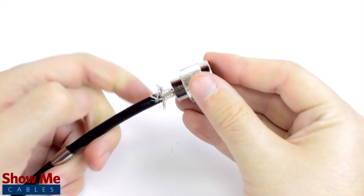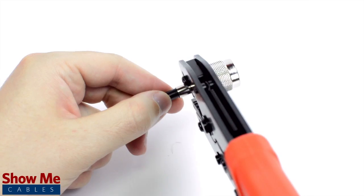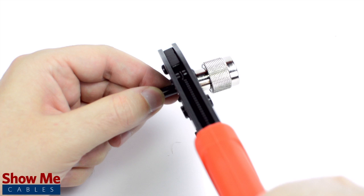Then slide the ferrule up to the base of the connector, folding the shield with it. Crimp the ferrule under the outer jacket to complete termination.